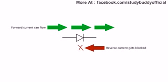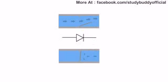A diode is a device that only allows current to flow in one direction. A helpful way of remembering this is to compare diodes to water valves that only allow water to flow one way.